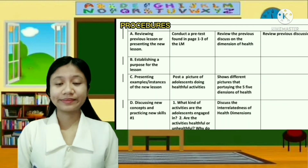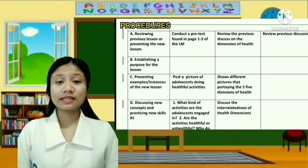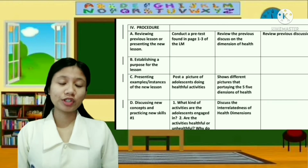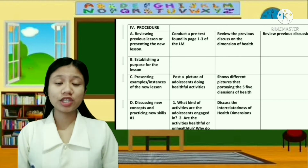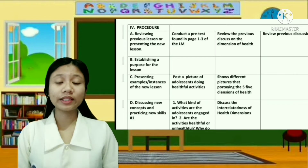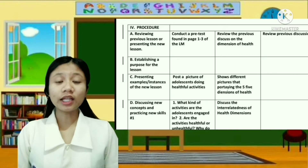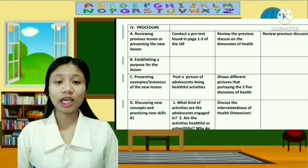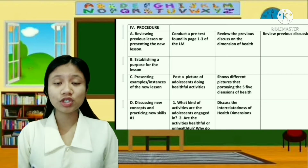Next is procedures. This part of the DLL contains 10 parts including: first is reviewing the previous lesson or presenting the new lesson — this is the review or presenting the new lesson. And next is establishing a purpose for the lesson, which will motivate the learner to learn the new lesson. You can tell what they will learn here. It is used for motivation.